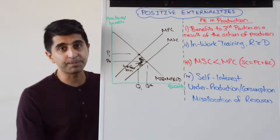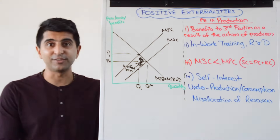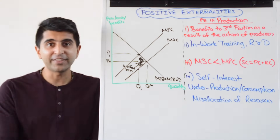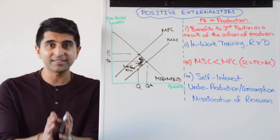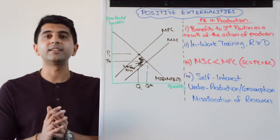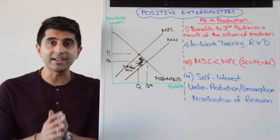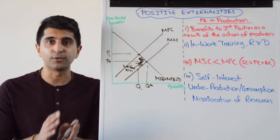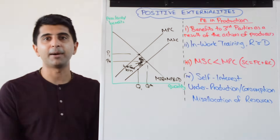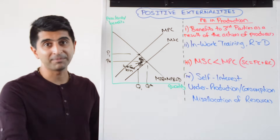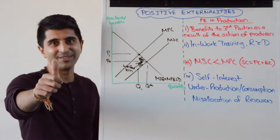So that covers positive externalities fully. Thanks so much for watching. Stay tuned and we'll look at the impact of merit and demerit goods and why they can lead to market failure as well. I'll see you in that video.